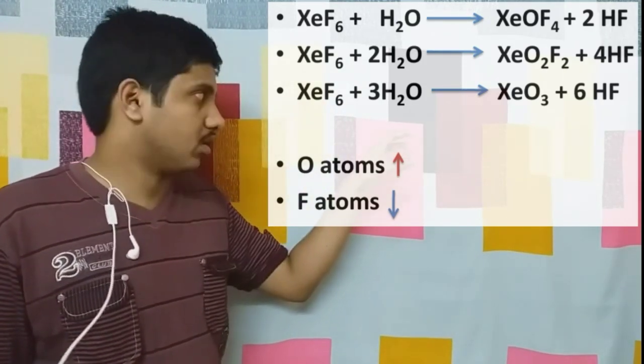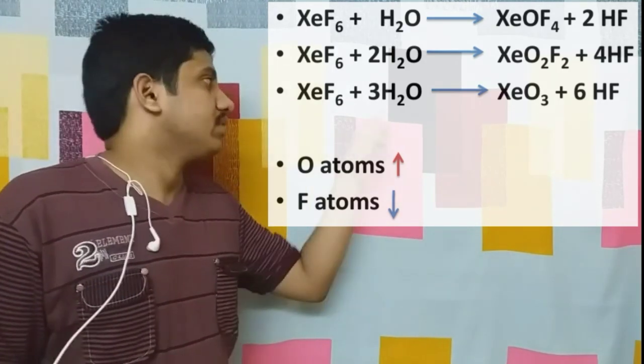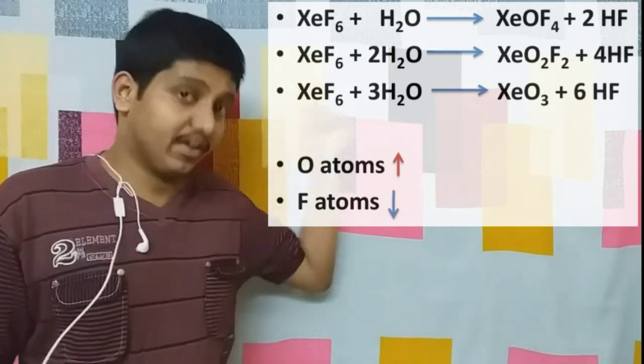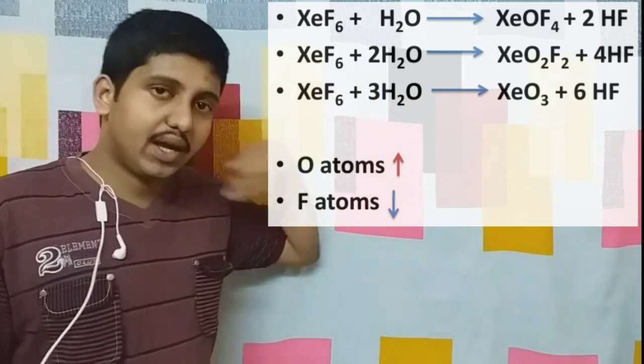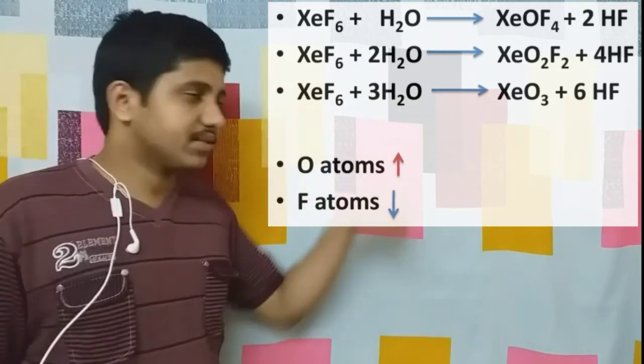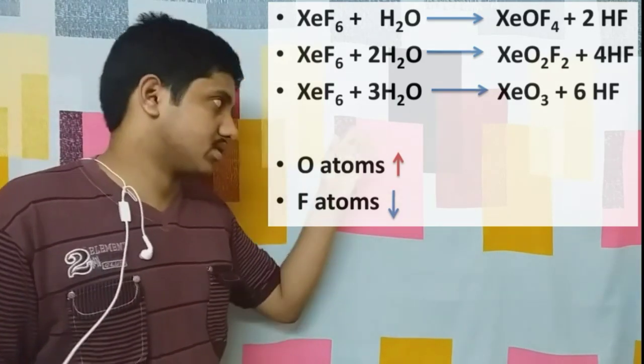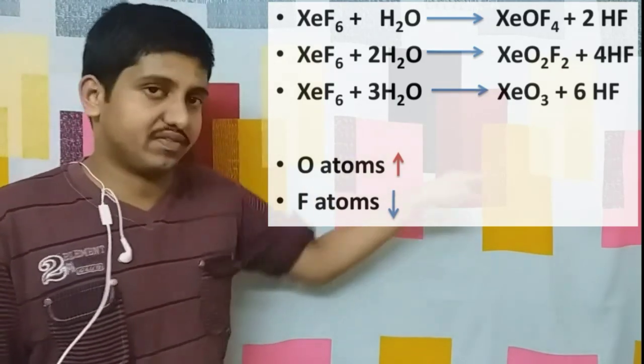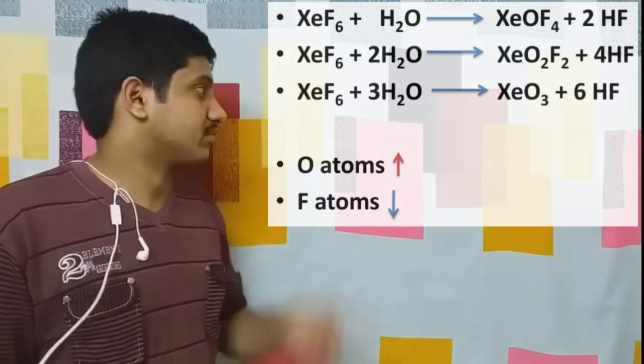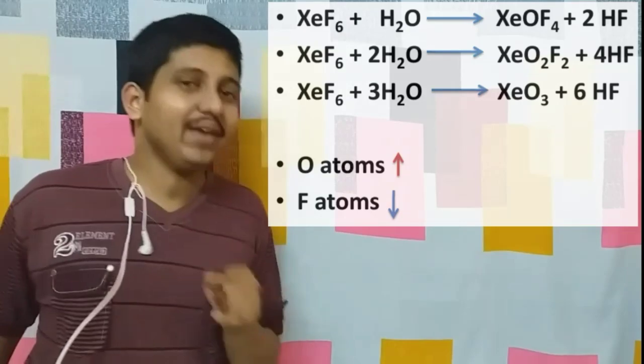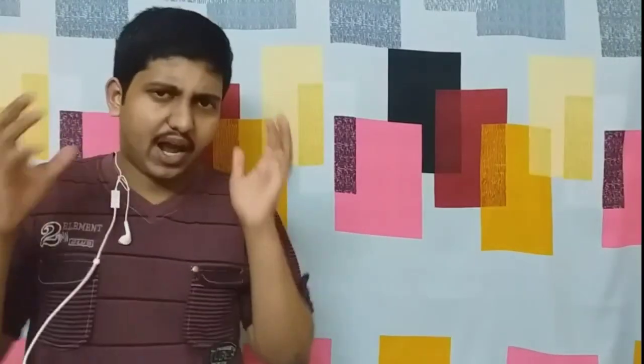Next case: xenon fluoride XeF6 with water. When fluorine atoms are more and oxygen atoms are less, we get XeOF4. As we add more water, fluorine atoms decrease and oxygen atoms increase. We get XeO2F2 when two molecules of water are present, and when three molecules of water are present, we get XeO3.